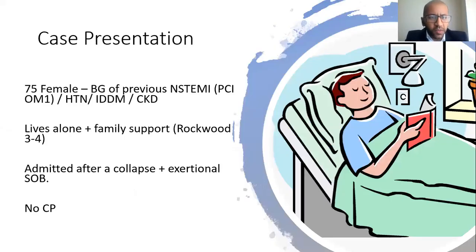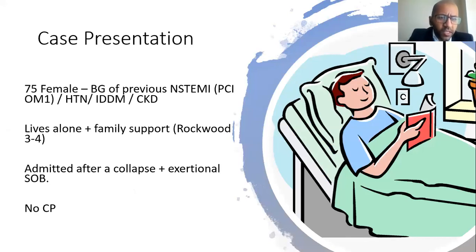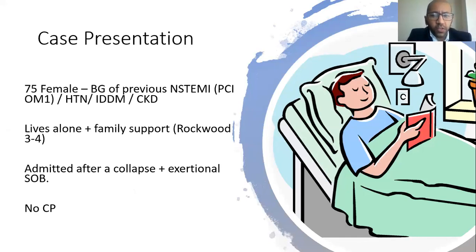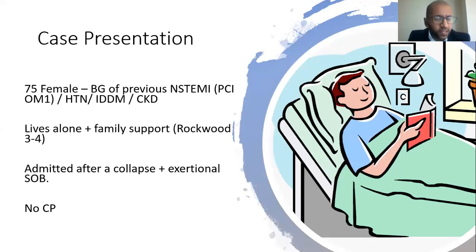Starting with the case presentation: a 75-year-old female with a background of previous STEMI where she had PCI to OM1. She's hypertensive with insulin-dependent diabetes and chronic kidney disease. She lives alone, needing family support, and has a Rockwood frailty score between three and four — a frailty score commonly used in the UK. She was admitted after a collapse with exertional shortness of breath, but denied any chest pain.